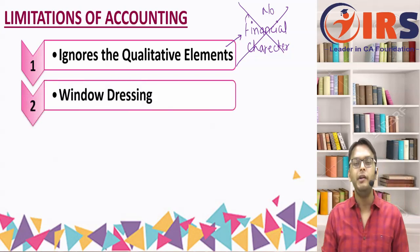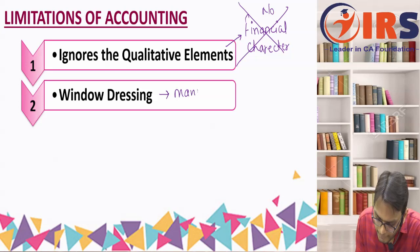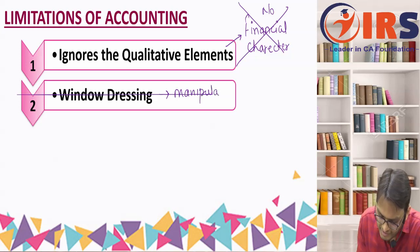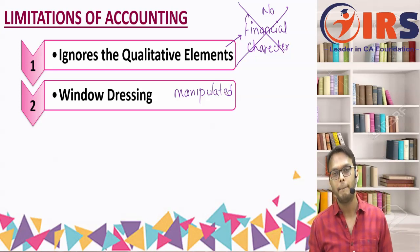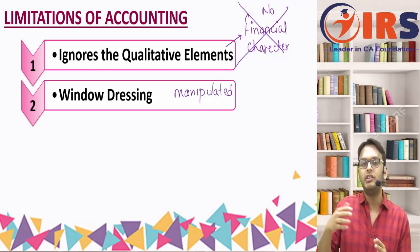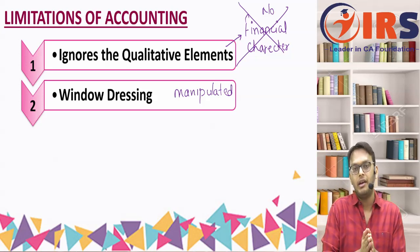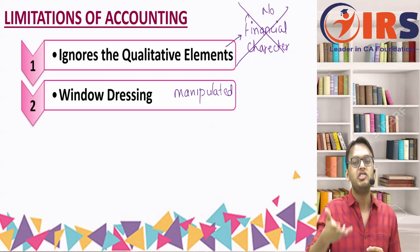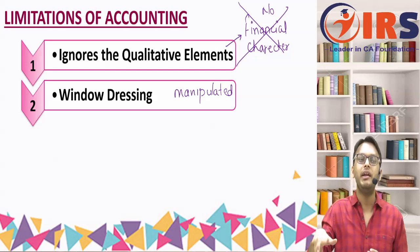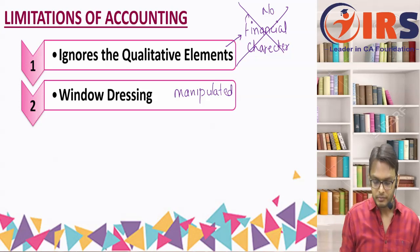The second limitation is window dressing — meaning accounting information can be easily manipulated. For example, the Nirav Modi scam and the Satyam scam — in these major frauds, the companies manipulated their financial statements, changed figures, and presented accounting according to their own interests. That is called manipulation or window dressing.